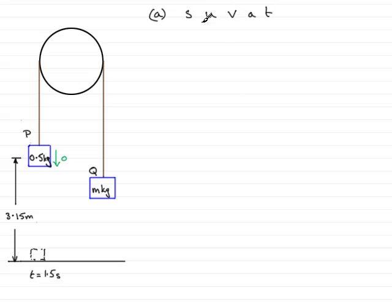Okay, what do I know? I know that s, if I take downwards as being positive, remember s is not distance but displacement. So the displacement downwards would be 3.15 meters. I know that u, the original initial velocity, was 0 meters per second. I know the time taken, t is 1.5 seconds. And I'm trying to find out a.